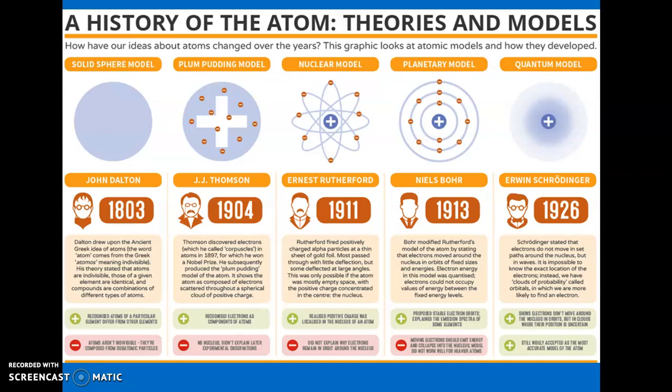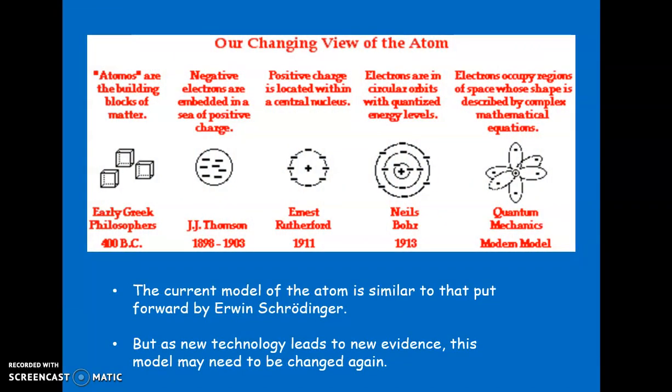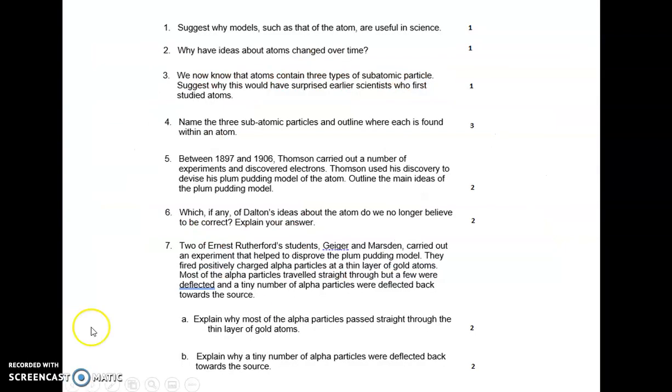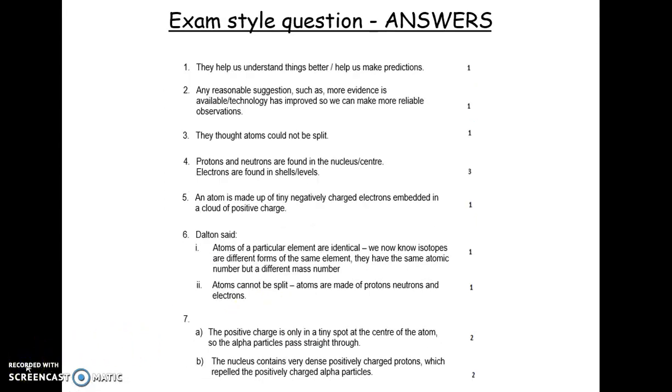You can pause the video at any moment and get any extra information down. Could you please create a timeline of this model, starting from the beginning all the way through to what we have right now? At the end you'll notice Erwin Schrödinger — that's our current-ish model, and we've built on that. As new evidence comes out, we might even have to change our model again. Pause the video, have a go at these exam questions, and the answers are coming up in just a second. Please check your answers, correct them, and we'll catch up next lesson. Thanks, guys.